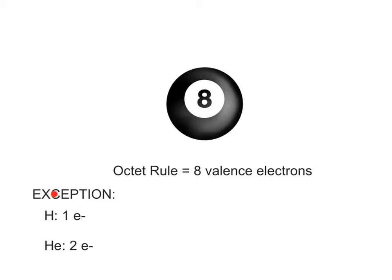The exception to the octet rule is in the case of hydrogen and helium. Hydrogen has only one valence electron and helium has two. Both of these atoms have just one electron shell, the first electron shell that's closest to the nucleus, which can hold a maximum of only two electrons. So, for both hydrogen and helium, they are stable when they have two electrons, not eight, in their valence shell.